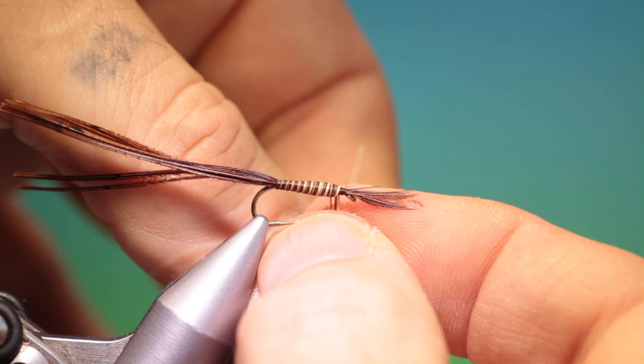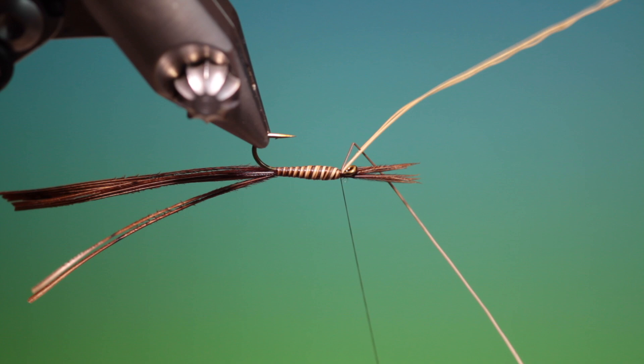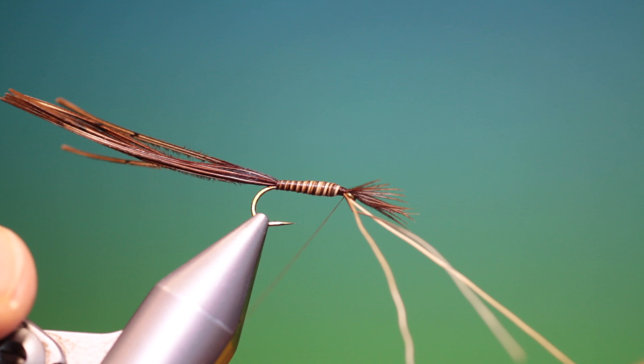And then we'll go back to the front, right to the front, turn that around and lock them off. You don't have to use moose mane here, you can use pheasant tail and make it a full pheasant tail water bug.